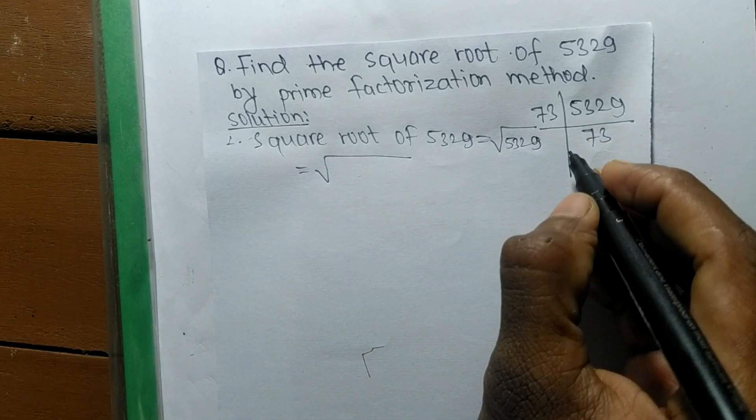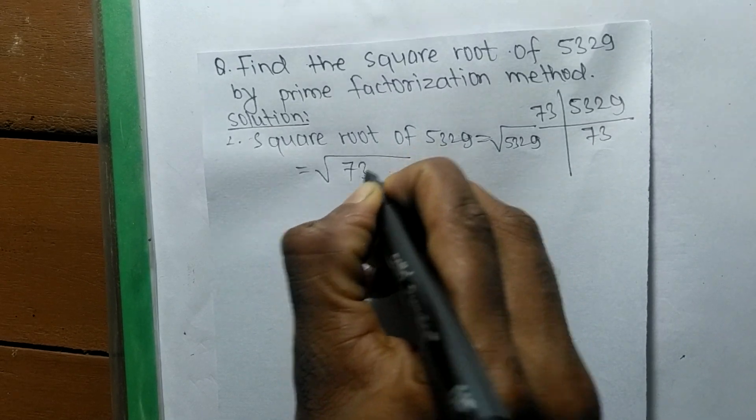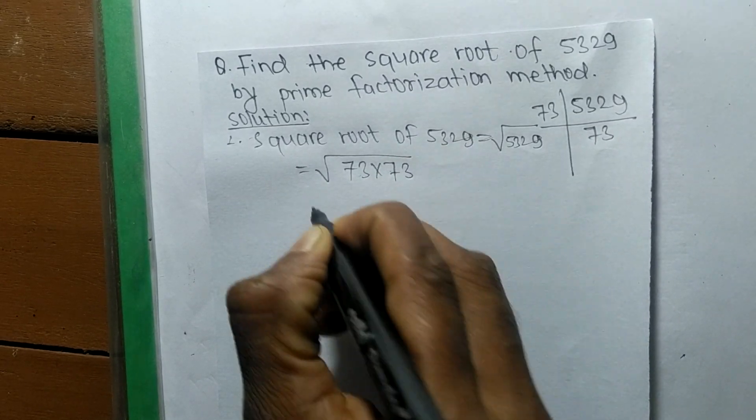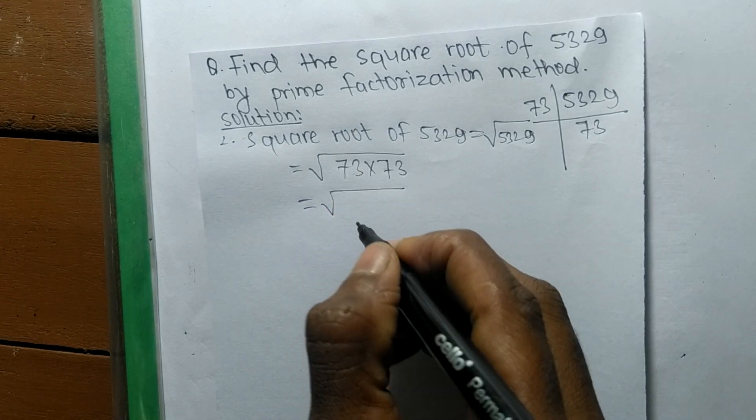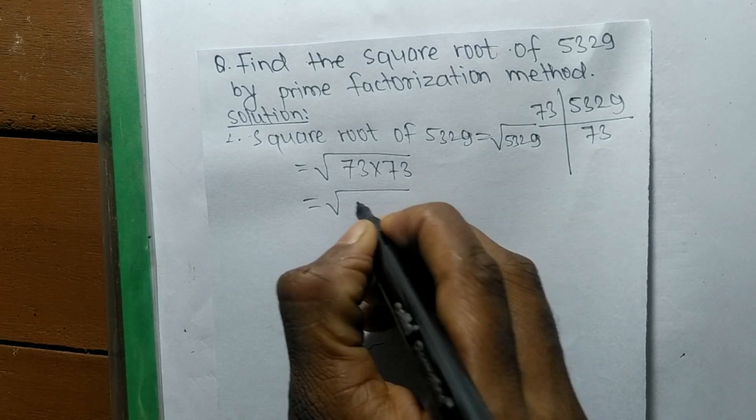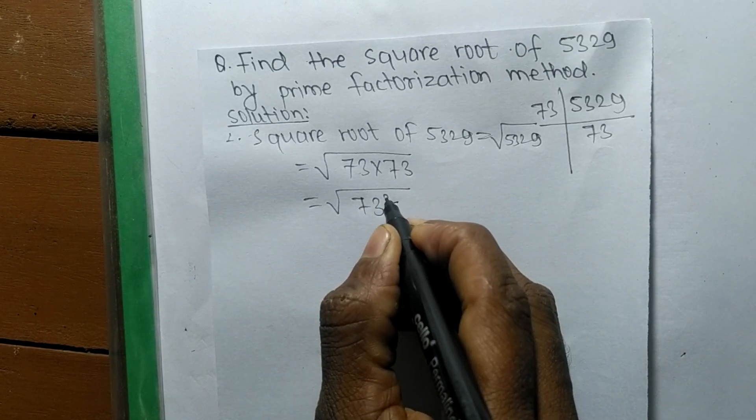Now we write prime factors, so it is 73 times 73. After writing prime factors, now we have to make its square. So 73 times 73 means it is 73 squared.